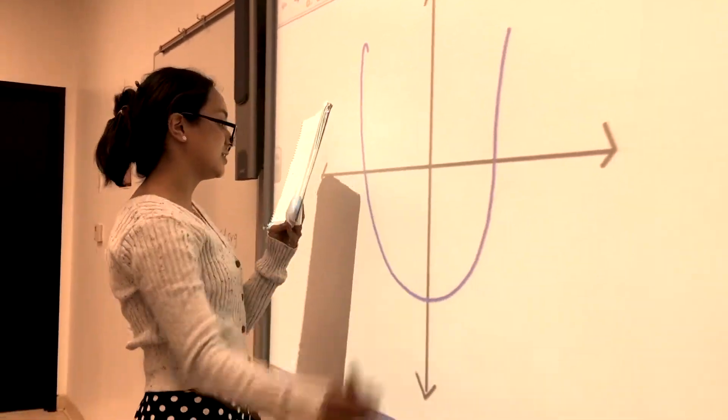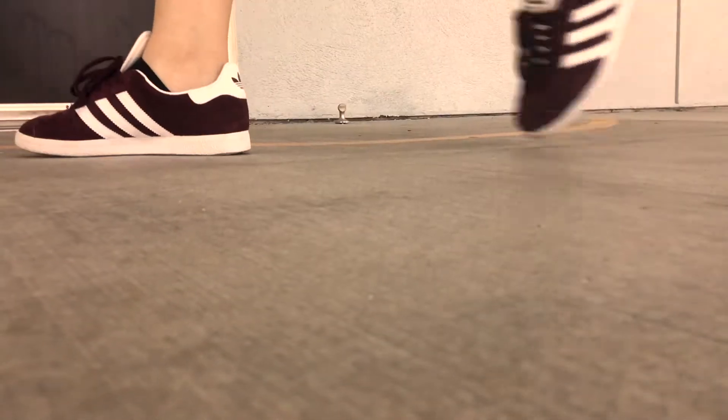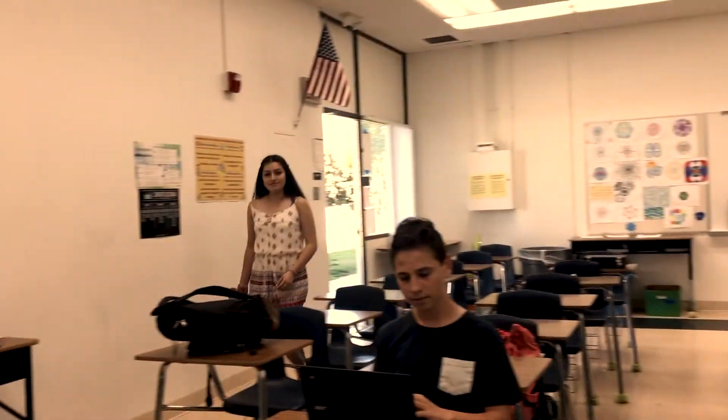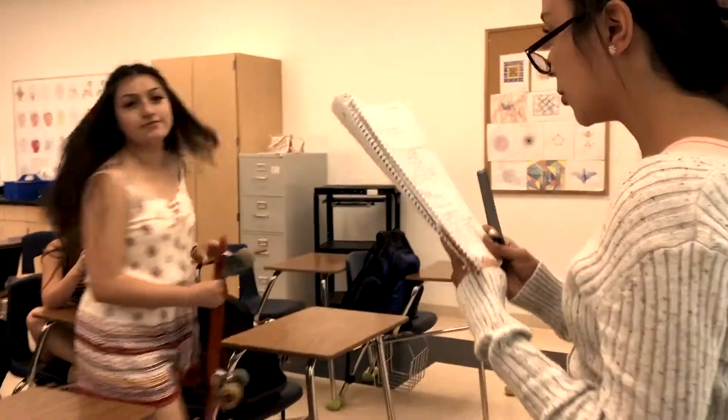A parabola is a set of points in a plane that are the same distance from a given point and a given line in that plane. As I was saying, a parabola is a set of points in a plane that are the same distance from a given point...